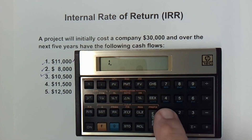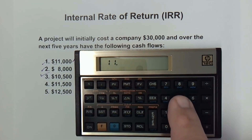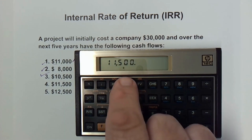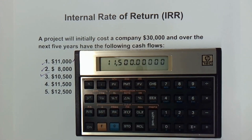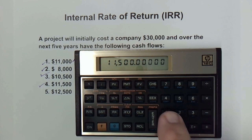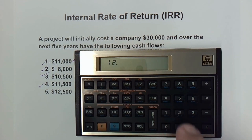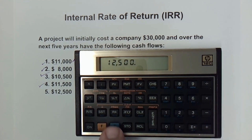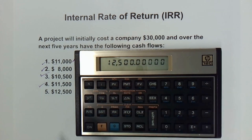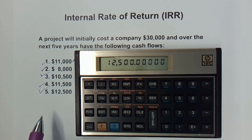$11,500 is the next one — blue button, CFJ. And finally $12,500. I've now accounted for all my cash flows.